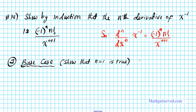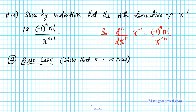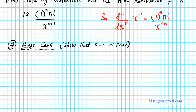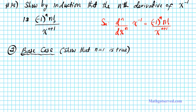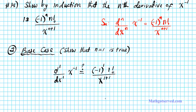So for n equals 1, the base case, we are taking the first derivative on the left side, and on the right side we are simply going to input 1 in the place of n. So we are going to compute d^1/dx^1 of x to the negative 1. The question is: is the first derivative equal to what you get when you plug in 1 for n in the expression on the right — negative 1 to the 1, times 1 factorial, over x to the 1 plus 1? Is this true or false? To do this, you have to remember the power rule for differentiation.